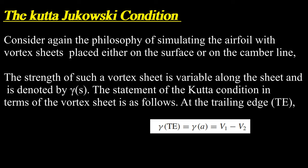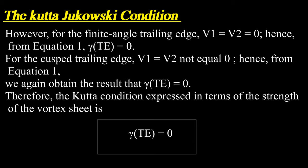At the trailing edge (TE), for the finite angle trailing edge, V1 equals V2 equal zero; hence, from equation 1, gamma(TE) equals zero. For the cusped trailing edge, V1 equals V2, not equal to zero; hence, from equation 1, we again obtain the result that gamma(TE) equals zero. Therefore, the Kutta condition expressed in terms of the strength of the vortex sheet is: gamma(TE) equals zero.